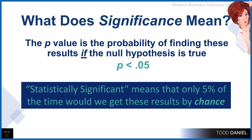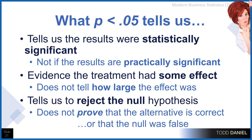The meaning of statistically significant is that the p-value is the probability of finding these results if the null hypothesis is true, p less than 0.05. So statistically significant means that only 5% of the time would we get these results by chance. What p less than 0.05 really tells us is that the results were statistically significant, not that the results were practically significant. There is evidence that the treatment had some effect, but it doesn't tell us how large that effect is. And it tells us to reject the null hypothesis, but it doesn't prove that the alternative hypothesis is correct or that the null hypothesis was false.